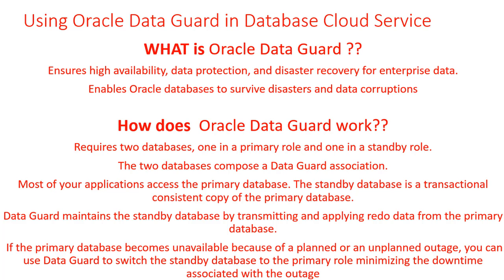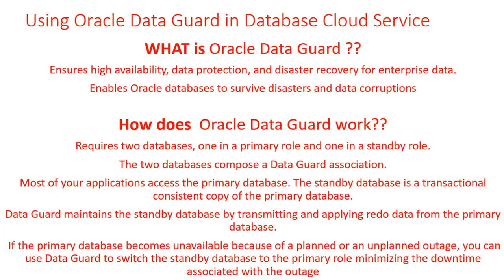If the primary database becomes unavailable because of a planned or unplanned outage, you can use Data Guard to switch the standby database to the primary role, minimizing downtime. For planned outages, you would have a short outage to switch the database role. For unplanned outages, when your database goes down and is unable to start up, you would switch the standby to become the primary.